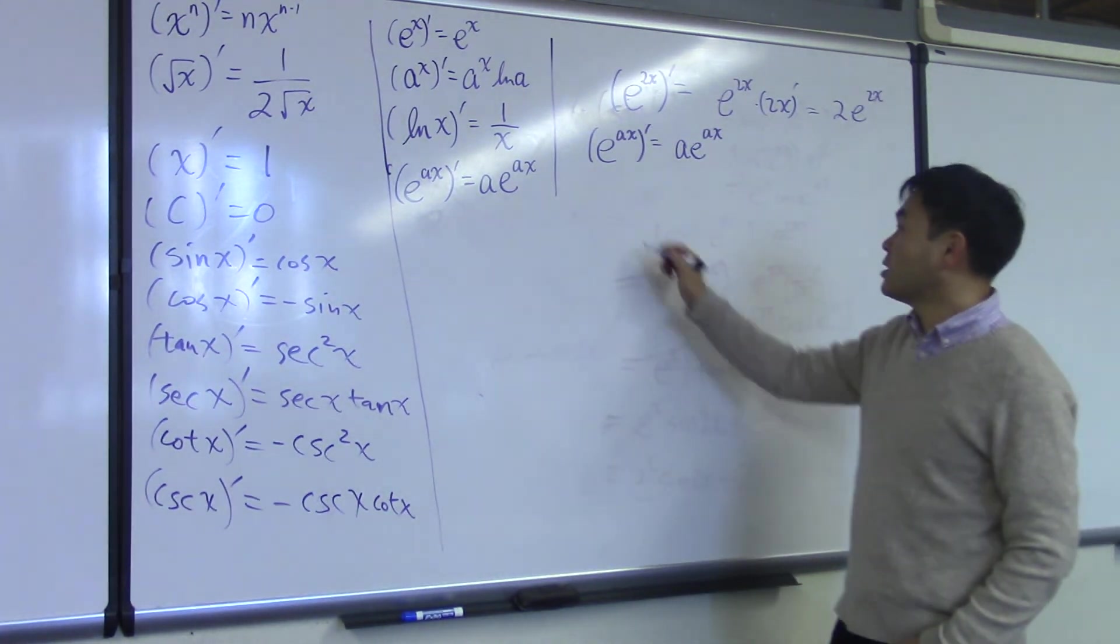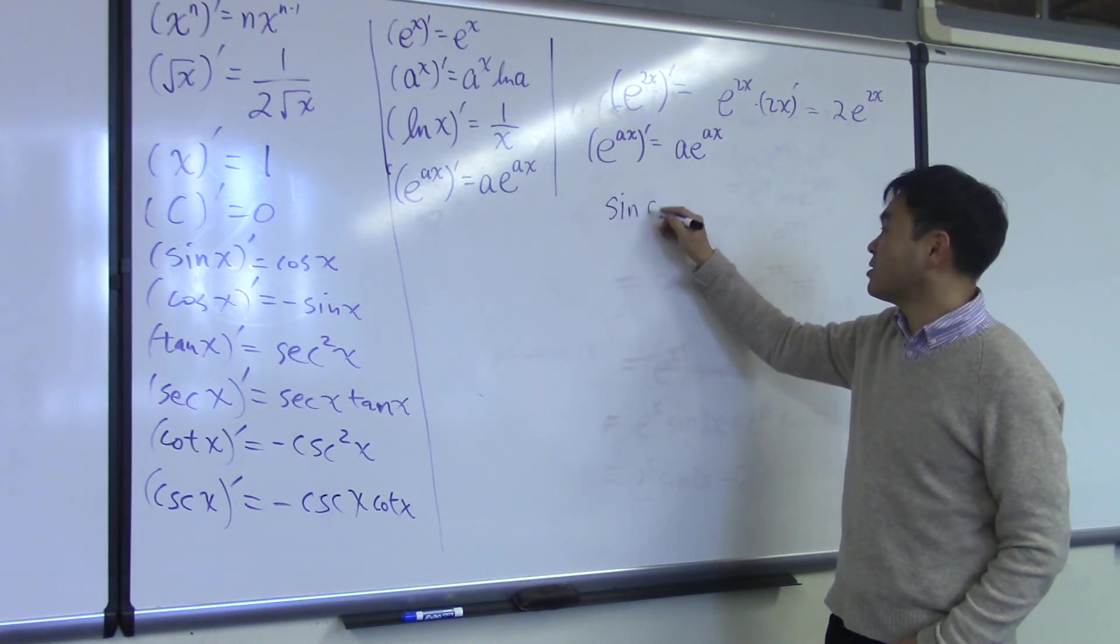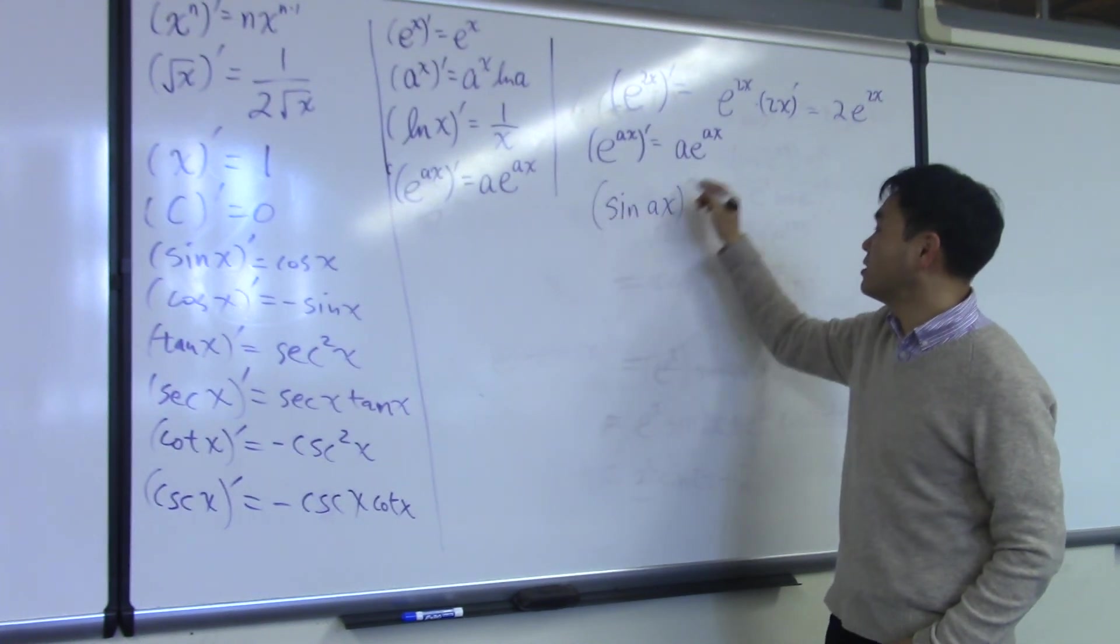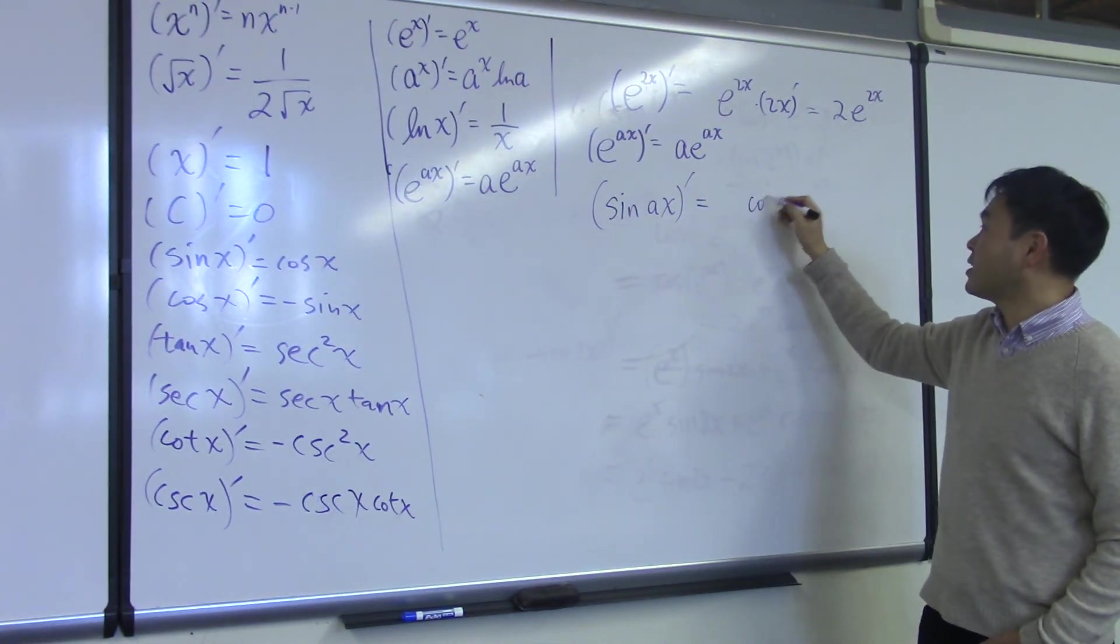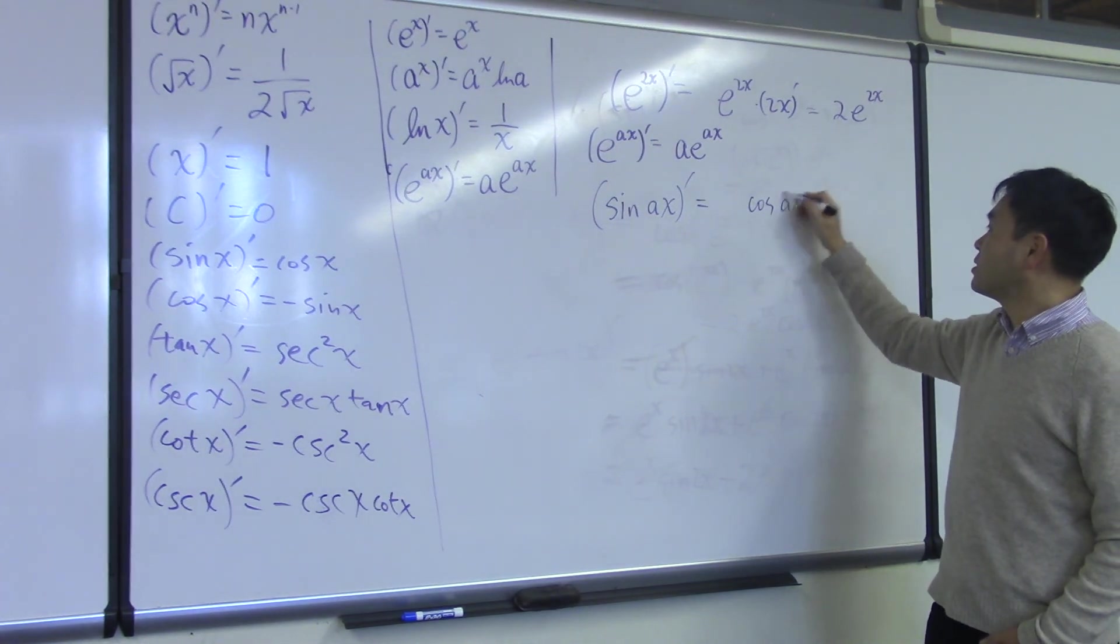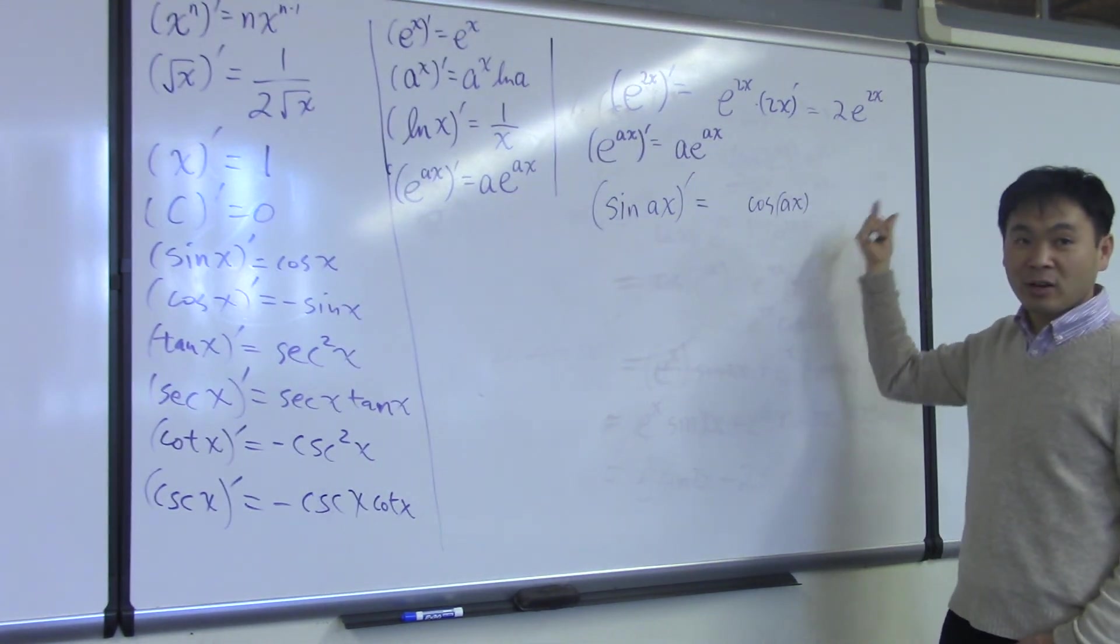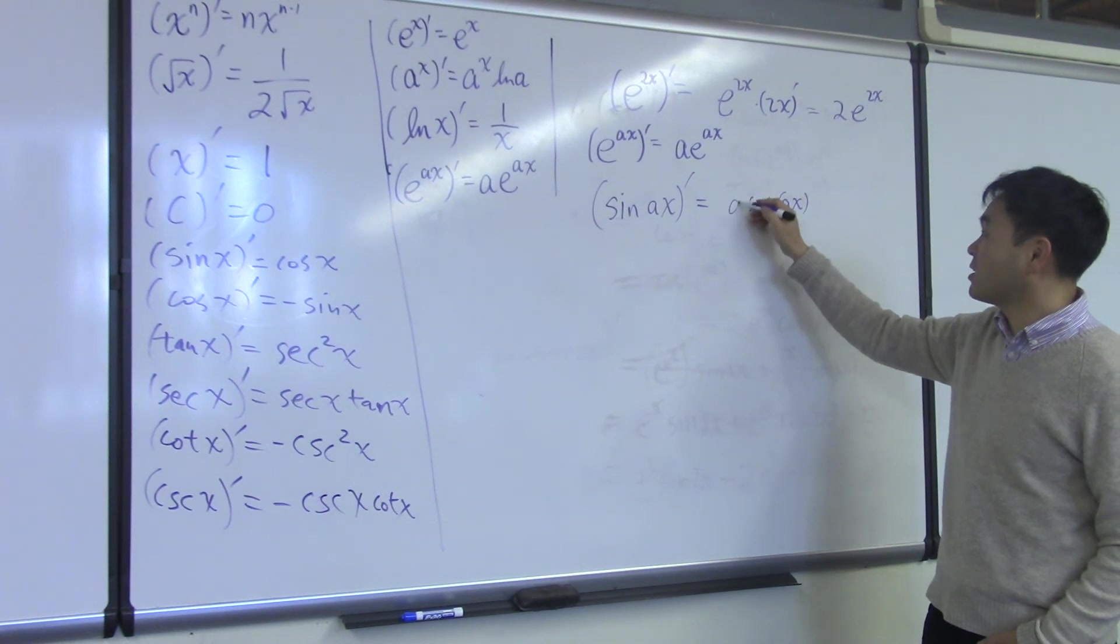Similarly, if you have sine ax, sine differentiates to cosine, but then ax, you have to pull it outside and differentiate, so a comes outside.